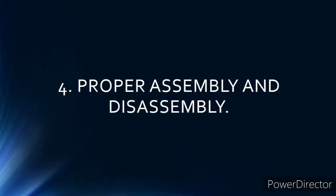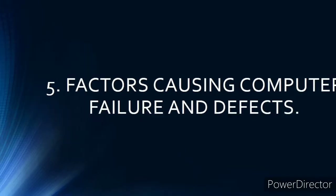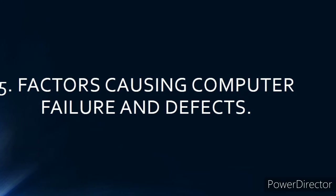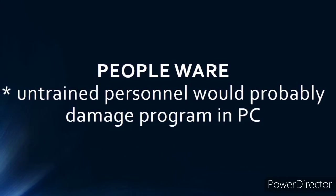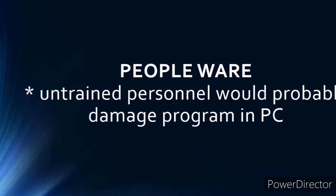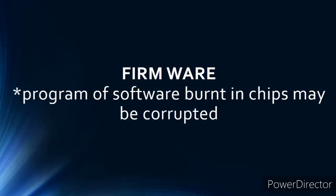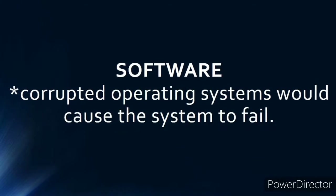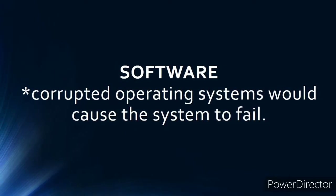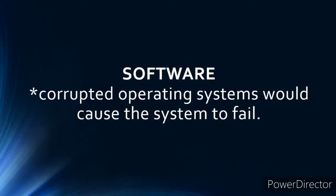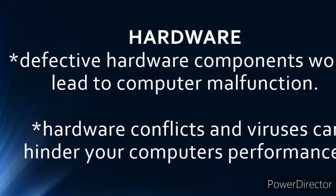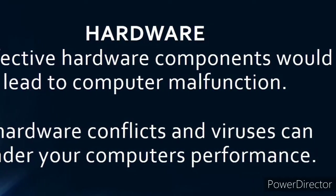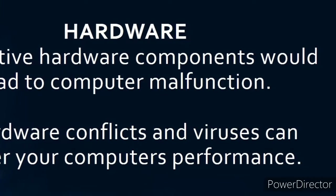Fourth, proper assembly and disassembly. Fifth, factors causing computer failure and defects: people — untrained personnel would probably cause damage. Firmware — programs in PC firmware burned in chips may be corrupted. Software — a corrupted operating system would cause the system to fail. Hardware — defective hardware components would lead to computer malfunction. Hardware conflicts and viruses can hinder your computer's performance.